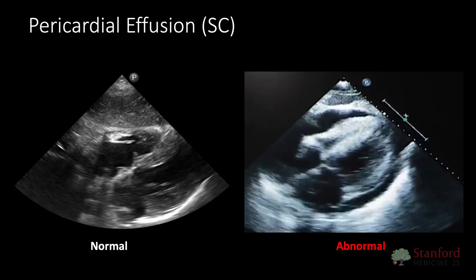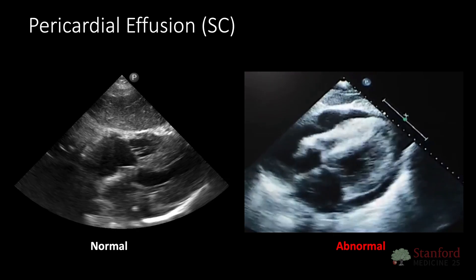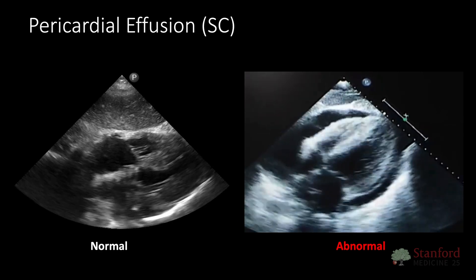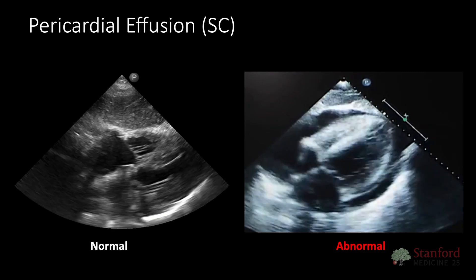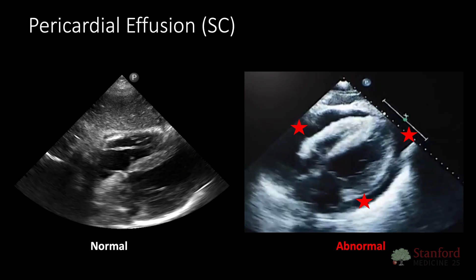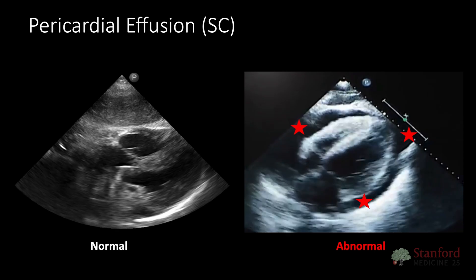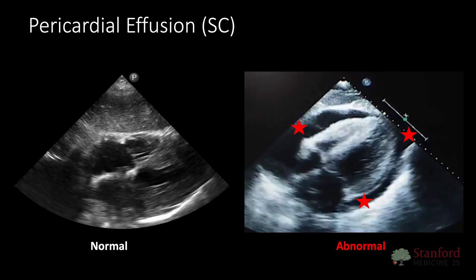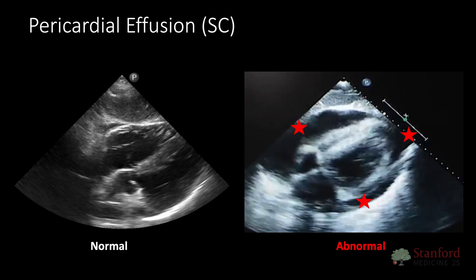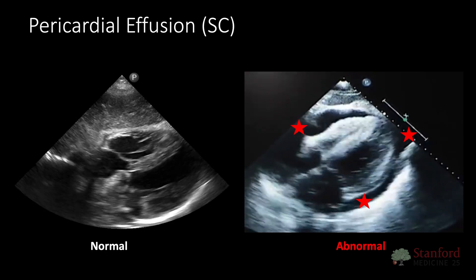Next, let's discuss the subcostal or subxiphoid view for pericardial effusion. As mentioned, this is one of the most sensitive views, and generally you can get a quick assessment of the effusion by scanning the patient. Here we see an image of a pericardial effusion surrounding the entire heart. You may hear about assessments of right atrial collapse and right ventricular collapse — these are a little bit more advanced. Generally, the assessment of pericardial tamponade or hemodynamic compromise is beyond the scope of POCUS. You should just incorporate POCUS into your clinical exam before determining if an effusion is clinically relevant or not.